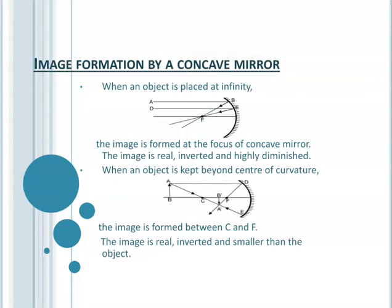There are six positions of objects and corresponding images in a concave mirror. The first position: when an object is placed at infinity, parallel rays coming from infinity after reflection meet at the focus. The image is formed at focus F, and its nature is real, inverted, and highly diminished.